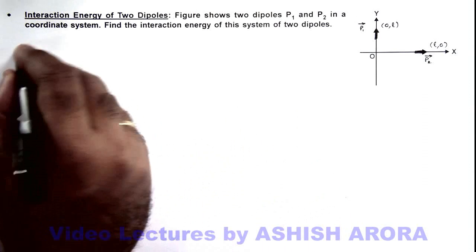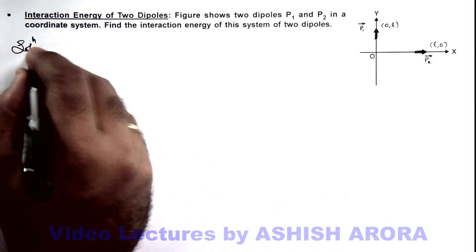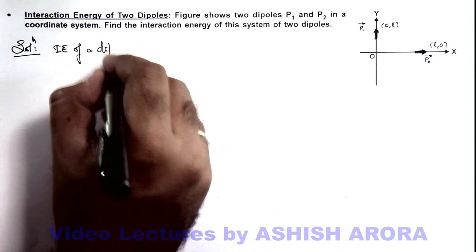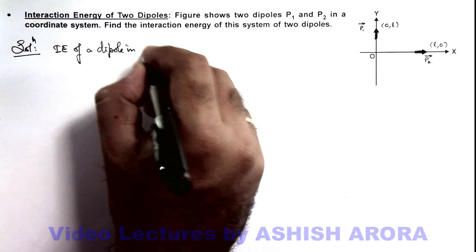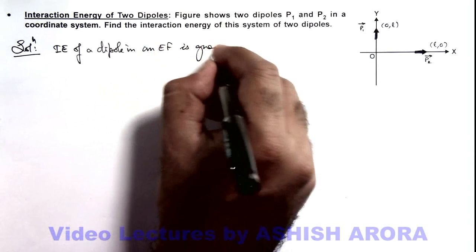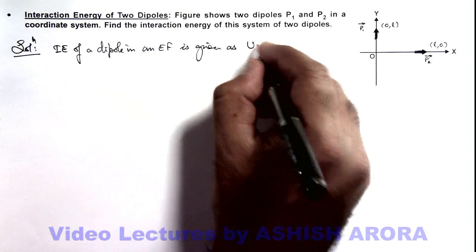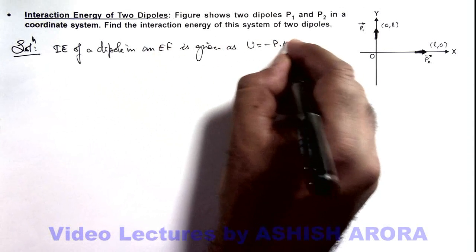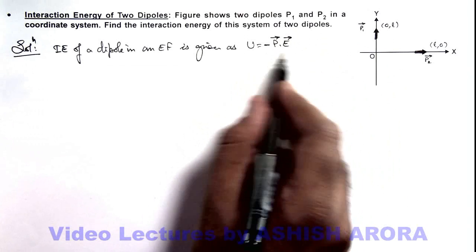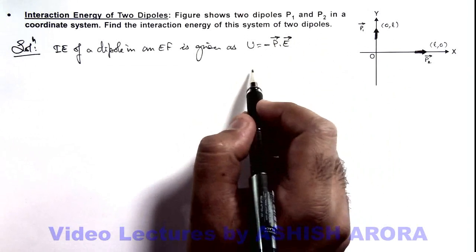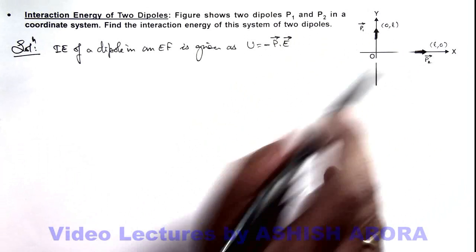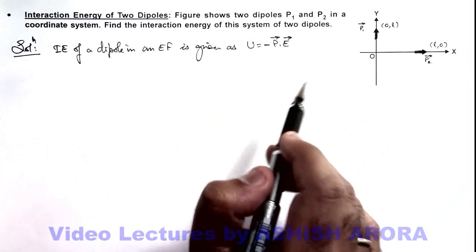We already studied in our conceptual videos that the interaction energy of a dipole in an electric field is given as U = -p·E, where E is the electric field in which the dipole moment p is placed. Here there are 2 dipoles, which means in the field of one dipole another dipole is placed, so we can easily find out the interaction energy.